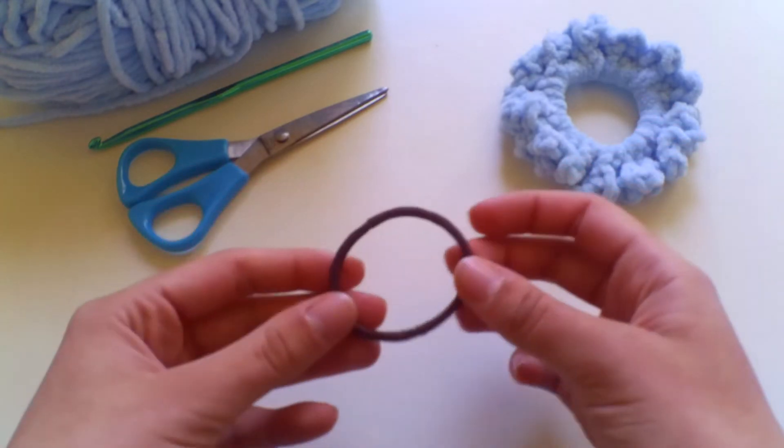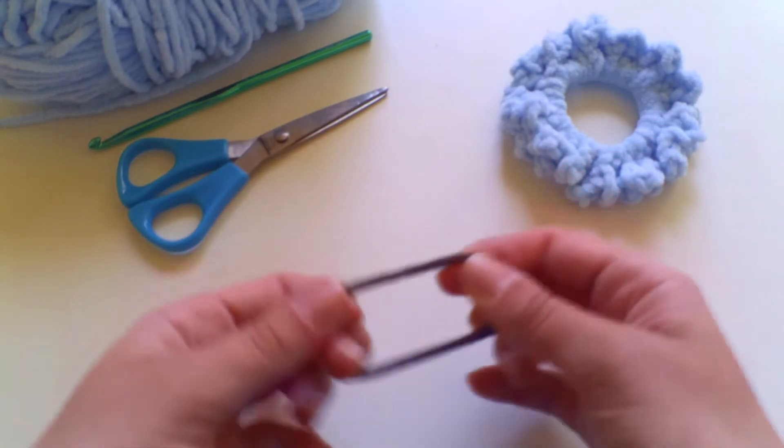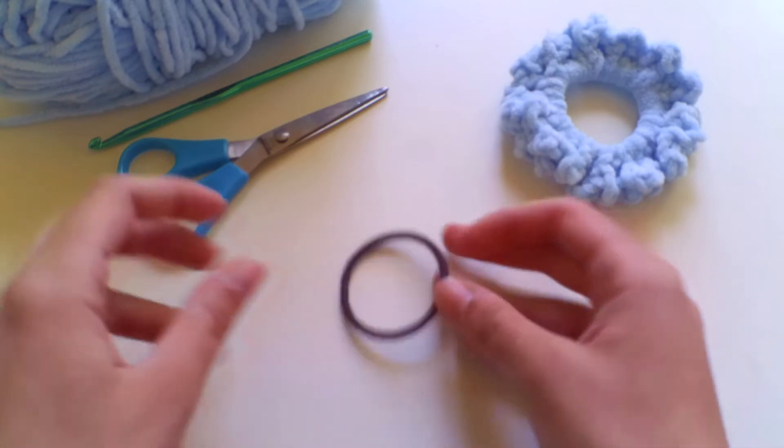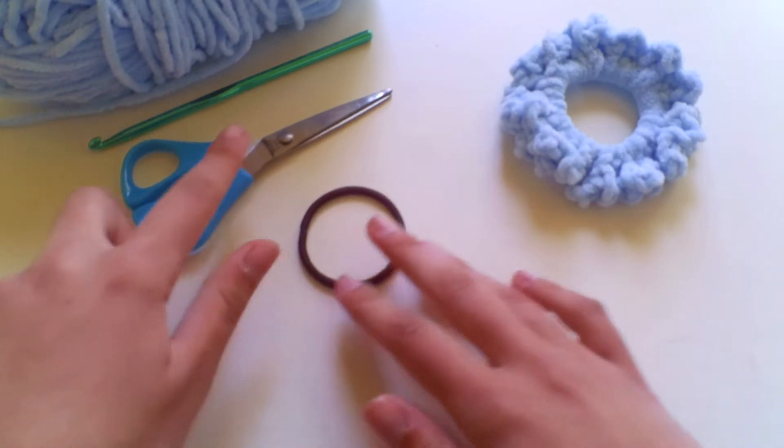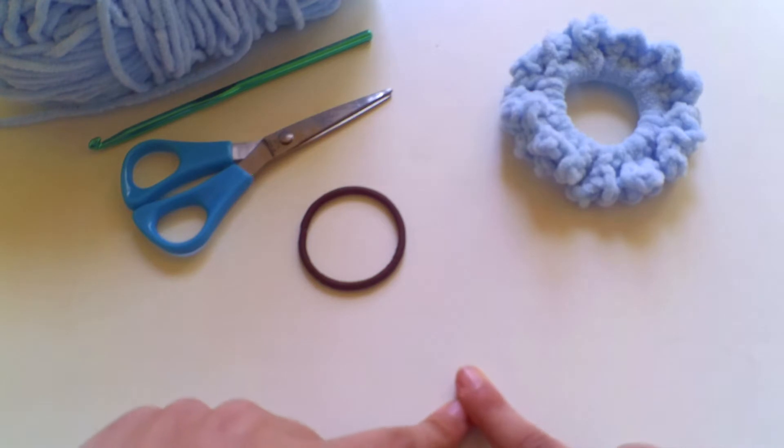So I've just got a simple bobble as well. Obviously choose the bobble that works for your hair type and then a hook and some scissors and you will need a darning needle as well to sew in your ends. So without further ado we shall begin.